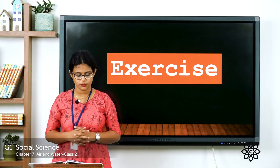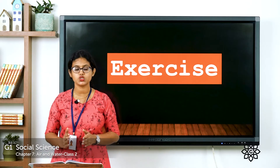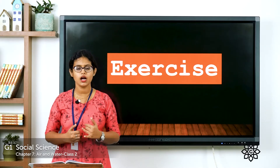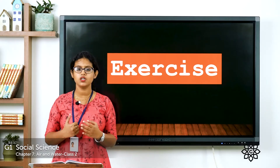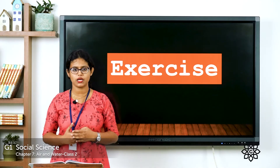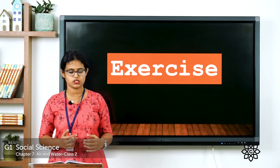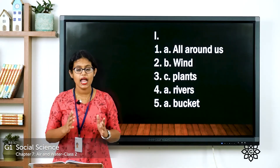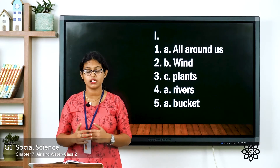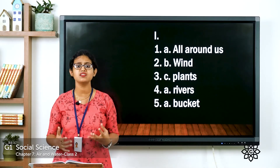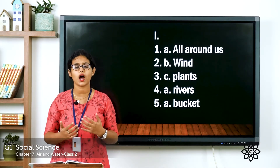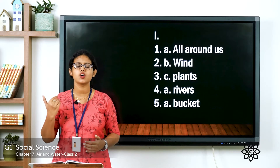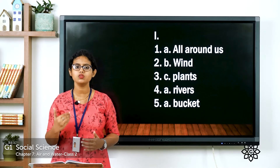The fifth question: Use a dash to take a bath — options are: bucket, shower head, hose pipe. Now let's see the answers. The first one — air is everywhere, so air is all around us. The answer is A: air is all around us.